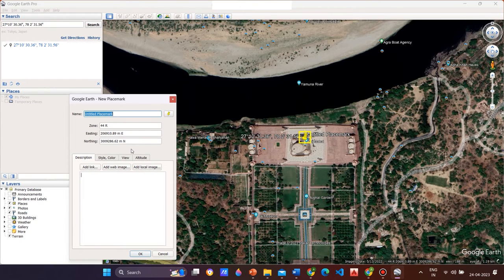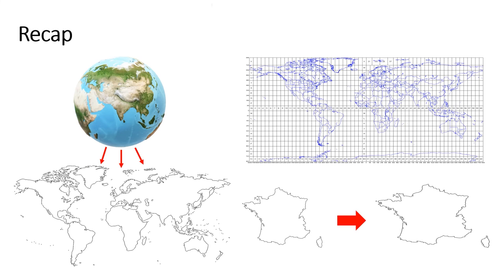Now let us take a quick recap. First we discussed the projected coordinate system, followed by the distortions, and finally the UTM coordinate system. With this we have come to the end of the video. I hope you have got an idea of the projected coordinate system and how to convert a coordinate to a projected coordinate system.